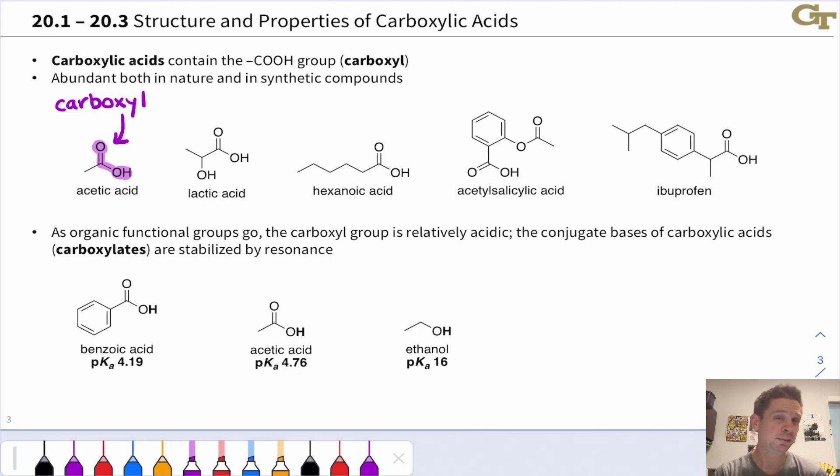If you compare a seemingly related, similar looking structure in ethanol, the pKa is way up at 16. So these carboxylic acids, benzoic and acetic acid, are way more acidic than ethanol.